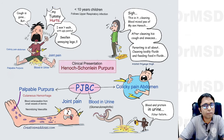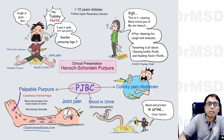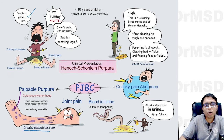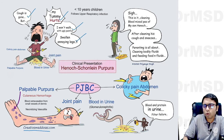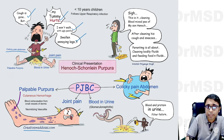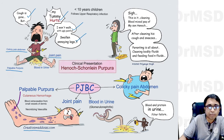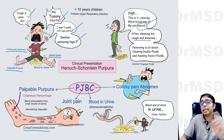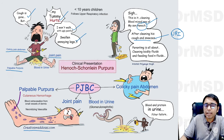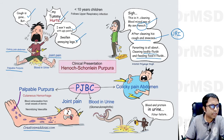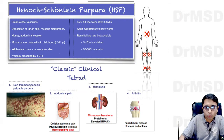Here is a simple mnemonic to remember the features of Henoch-Schönlein purpura. A child is crying saying: 'Cough is gone, mom, but my tummy hurts — I won't walk with ugly, painful, swollen and annoying legs.' This covers colic abdominal pain, joint pain, and palpable purpura. And the mom is saying she is cleaning blood-mixed pee of her son Henok, after clearing his cough and sneezes — the earlier upper respiratory infection manifestations. So the tetrad is: non-thrombocytopenic palpable purpura, abdominal pain, hematuria, and arthritis.